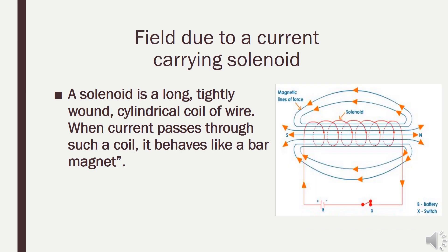Now coming to the applications of Ampere's Law. The first application is the field due to a current carrying solenoid. In this topic we will find out the magnetic field strength due to a current carrying solenoid. A solenoid is a long, tightly wound cylindrical coil of wire. When current passes through such a coil it behaves like a bar magnet — producing a magnetic field just like a bar magnet does.